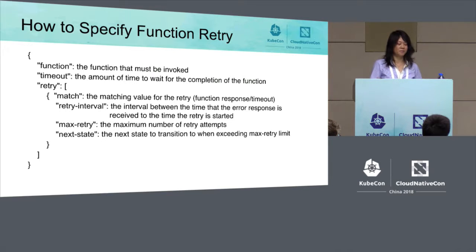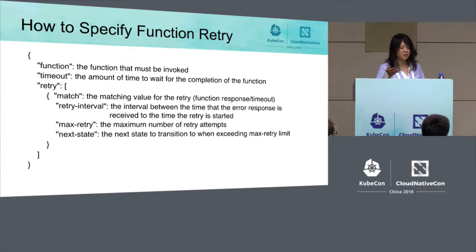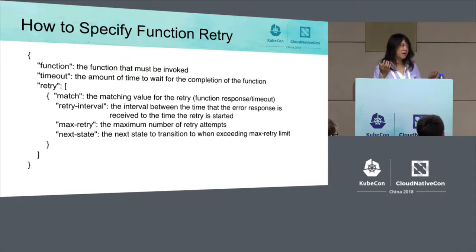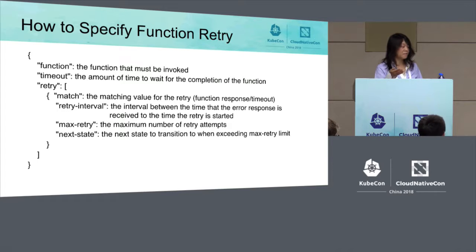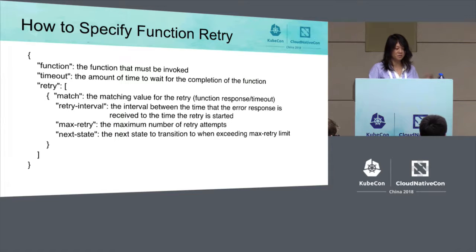The timeout parameter specifies the timeout period waiting for events — if nothing is received within that period, the workflow transitions to the end state. The action mode specifies whether functions should execute in sequence or in parallel. The actions field is where you specify a list of functions to be performed, and next state is the next state to transition to after all functions are successfully executed. For function retry, you can specify the function URN, a timeout for completion, the retry match value, retry interval, and maximum number of retries. Next state is also used when the max retry limit is exceeded.